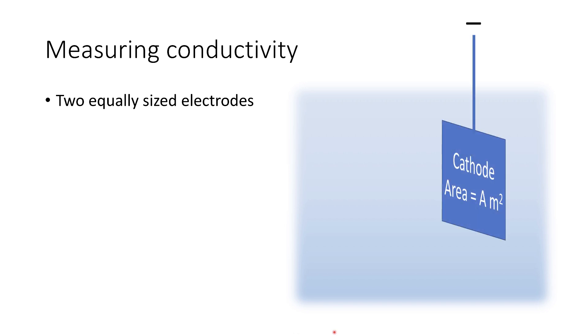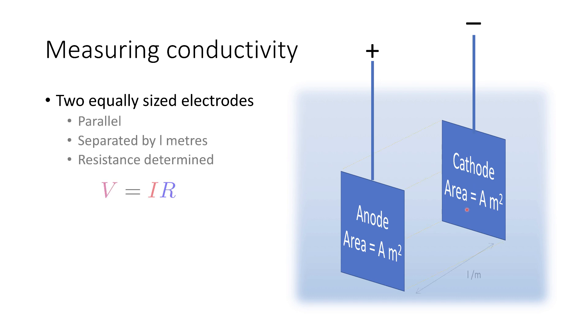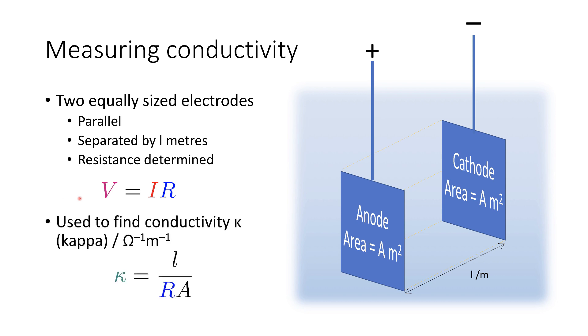Measuring conductivity is slightly tricky, but it's a fairly straightforward procedure once we see what's going on. To do it, we need to take two equally sized electrodes — a cathode and anode of equal area, parallel and separated by a fixed distance. We can then apply a potential difference across them and measure the current through the solution. This allows us to determine the resistance via the V = IR relationship. This gives us a value for the solution conductivity, which carries the symbol kappa (κ), a Greek letter K, with units of per ohm per meter.